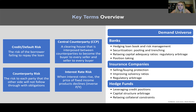The demand universe includes banks, insurance companies, and hedge funds. Banks have a loan book they want to hedge — regulations require them to risk manage effectively. The securitization process, pooling and tranching, is another way they use CDS to get risk off their books and relax capital adequacy requirements through regulatory arbitrage. Insurance companies like to buy or sell protection going out to longer durations, aligning with their investment objectives and improving their solvency ratios.